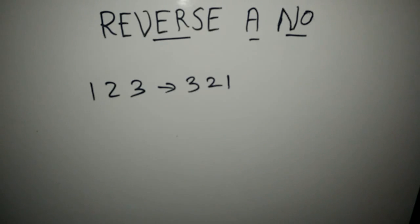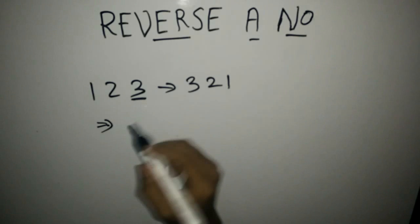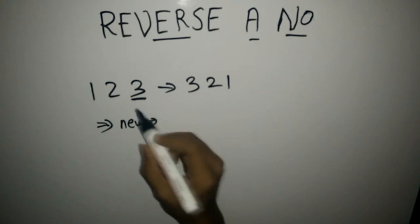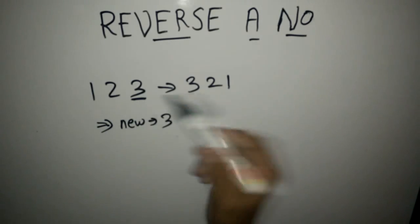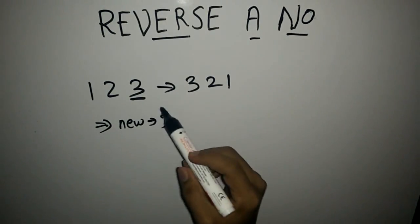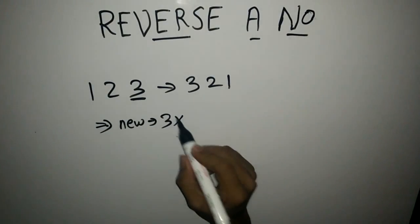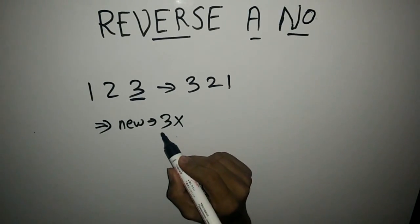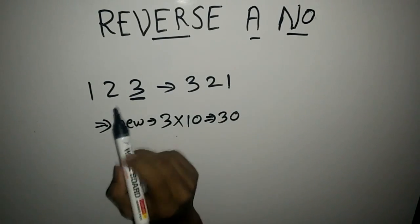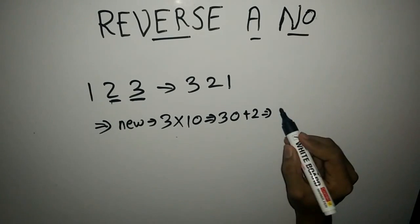Now what we have to do is take one number from the units place and store it in a new variable. So we take 3. After taking this 3, we have to eliminate it. Then we multiply this number 3 by 10, so we get 30, and then add the next digit, that is 2. So now the number is 32.